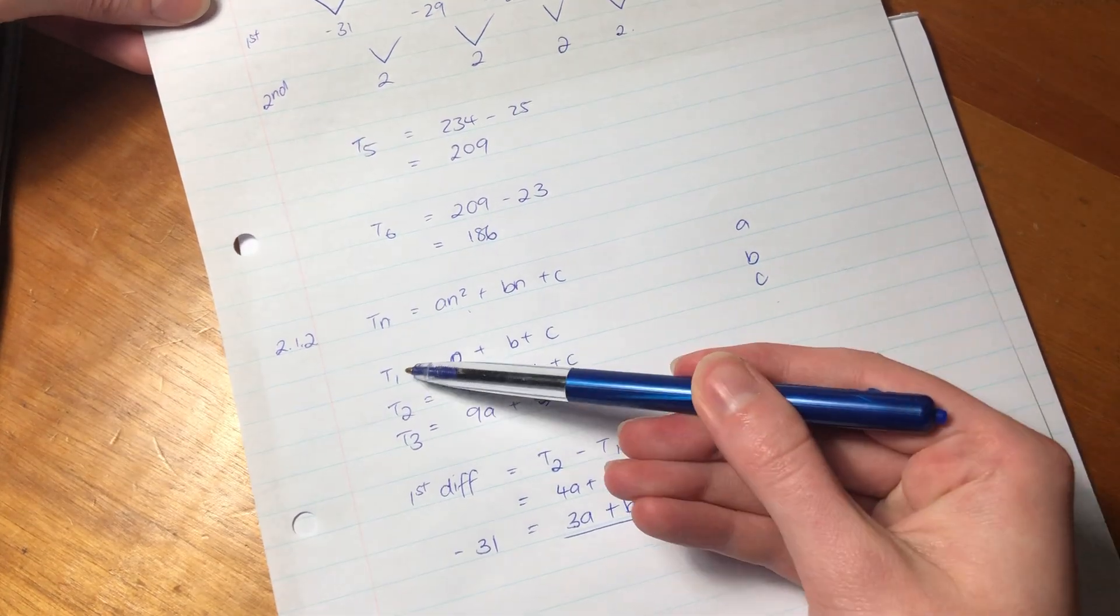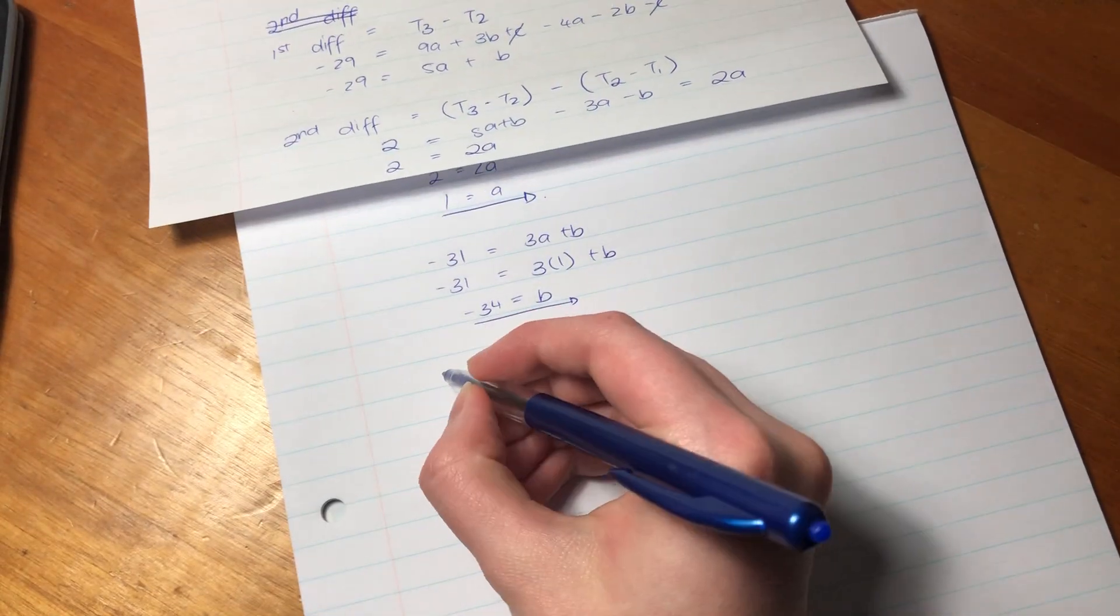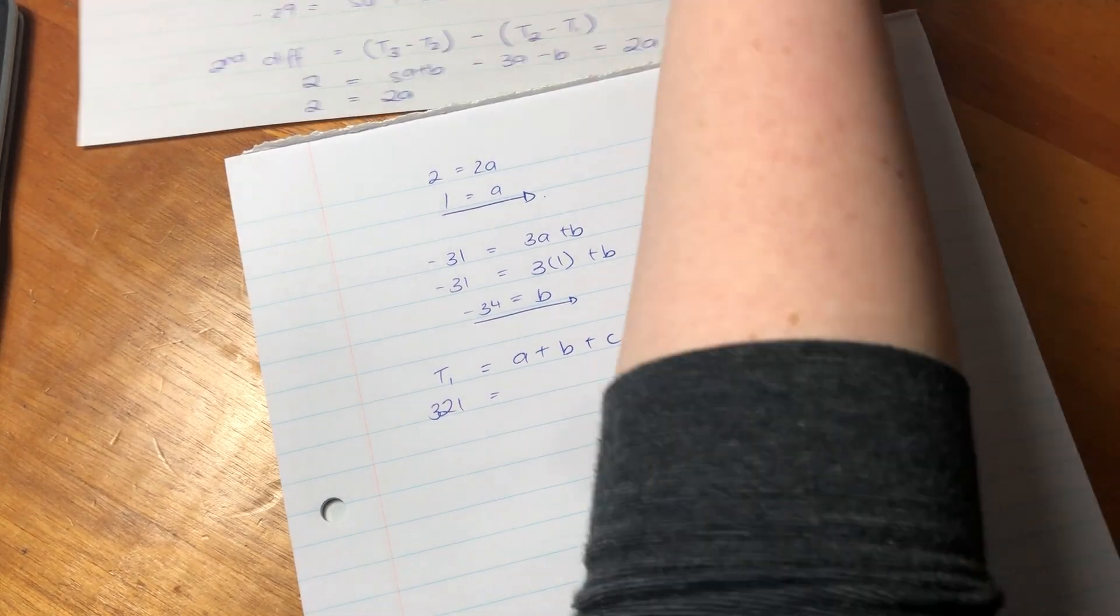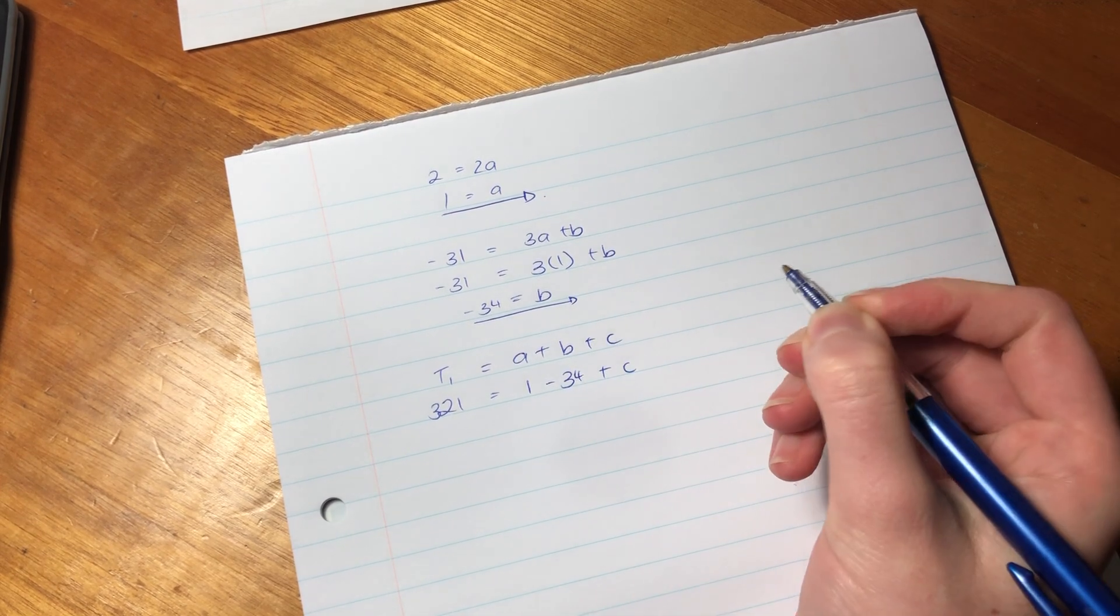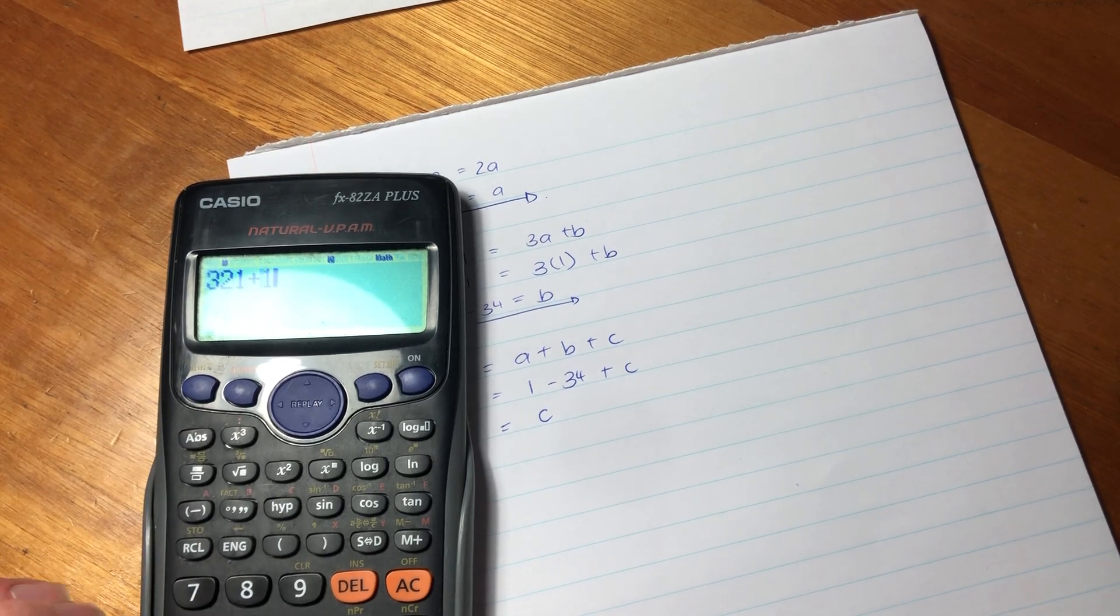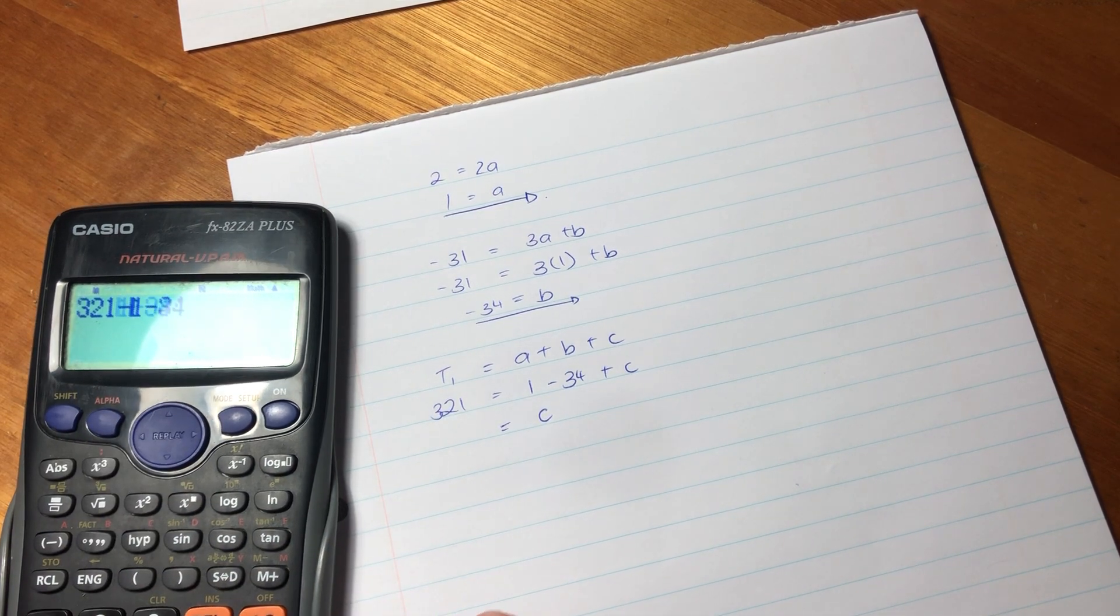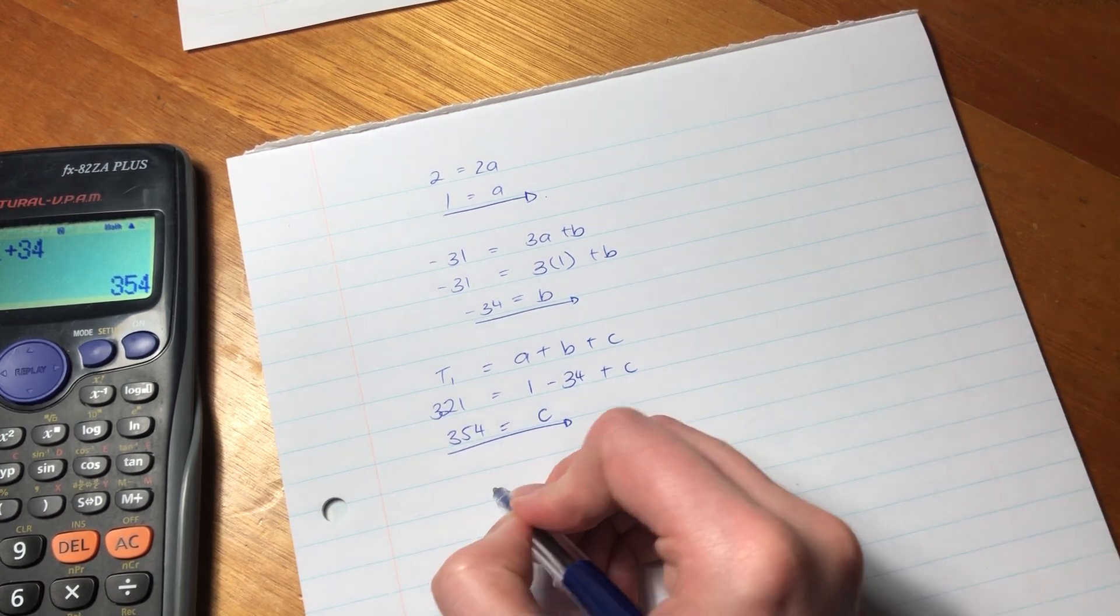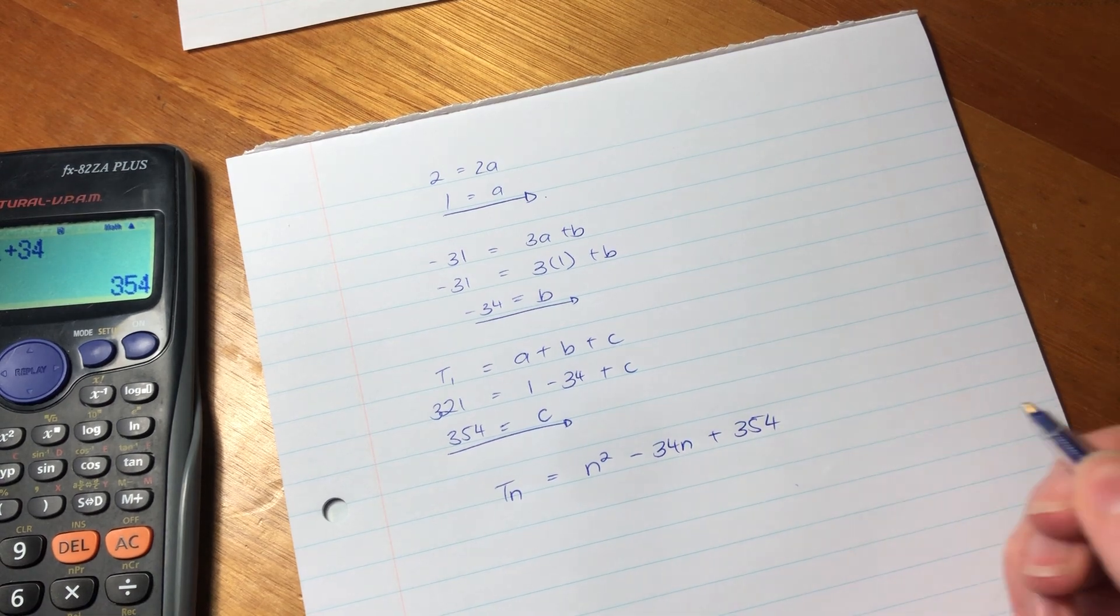Now we've done A and B. All we have to do is find C. Now the easiest way to find C is to plug it into one of these equations that we already put together. I'm just going to plug it into this one because it's the easiest one. So we know that T1 equals A plus B plus C. T1, the first term in the sequence is 321. So 321 is going to be 1 minus 34 plus C. So C is going to be 354. So our term that they've asked us TN would be N squared minus 34N plus 354.